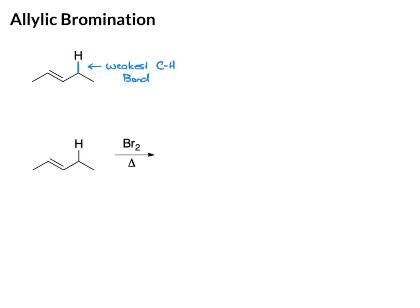We also have an allylic hydrogen over here on the methyl group, but this would be primary allylic versus secondary allylic. So this one's a little bit weaker. What this means is when this reacts with a bromine atom, that's the hydrogen that's going to be removed because that is the weakest bond.